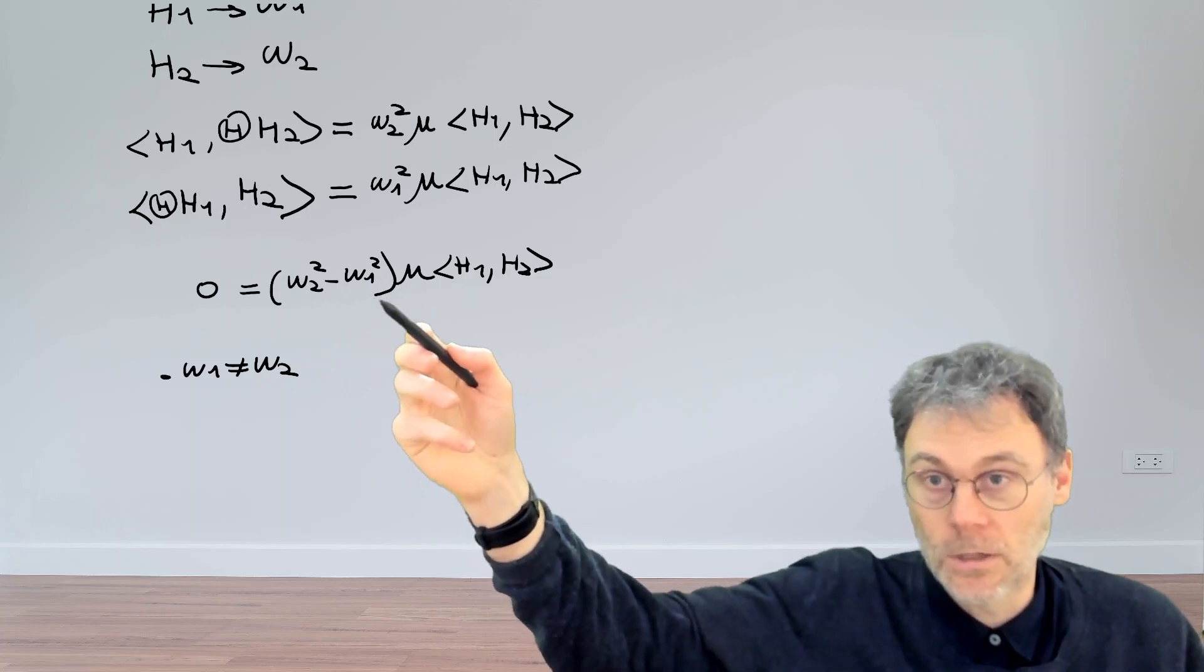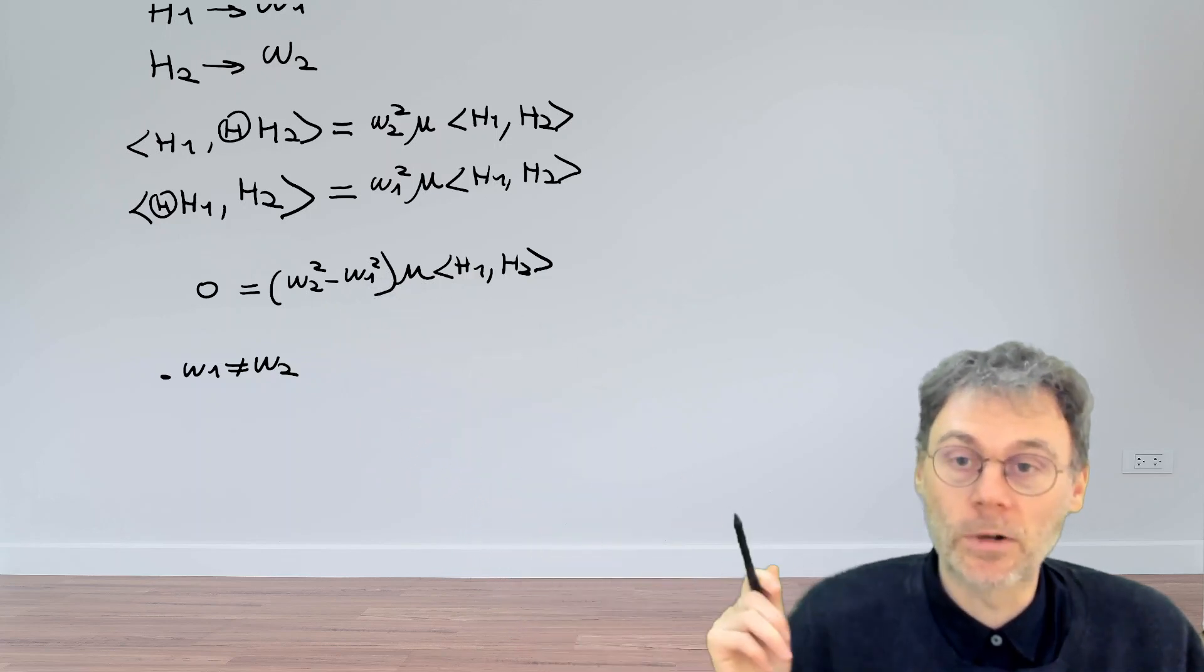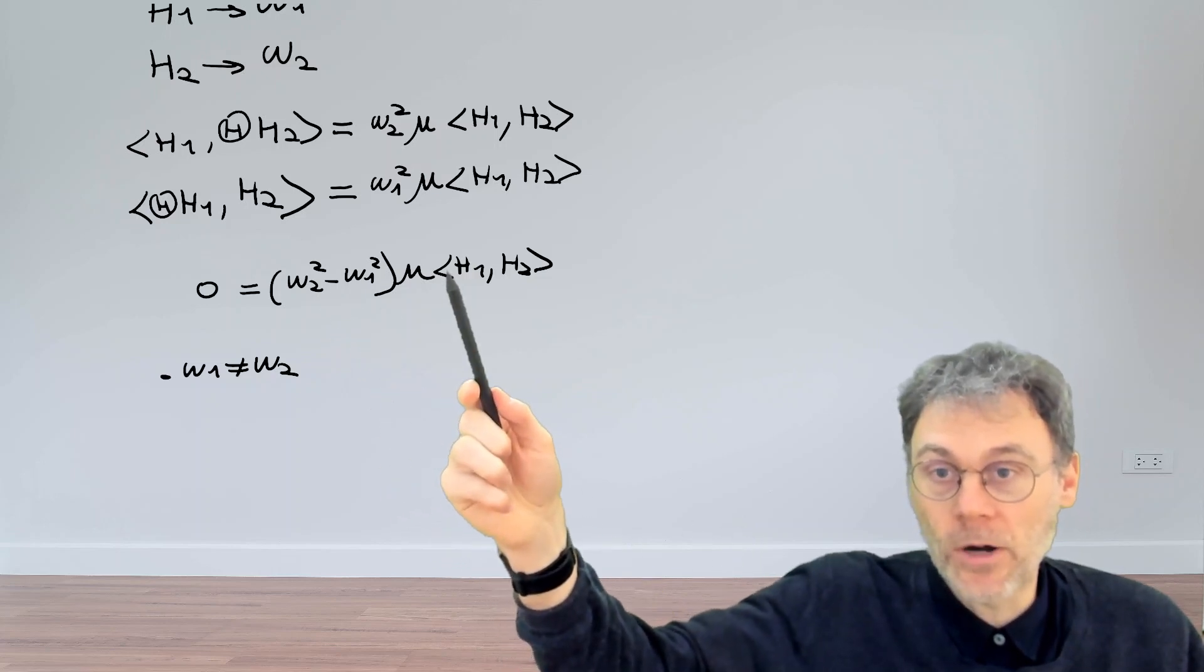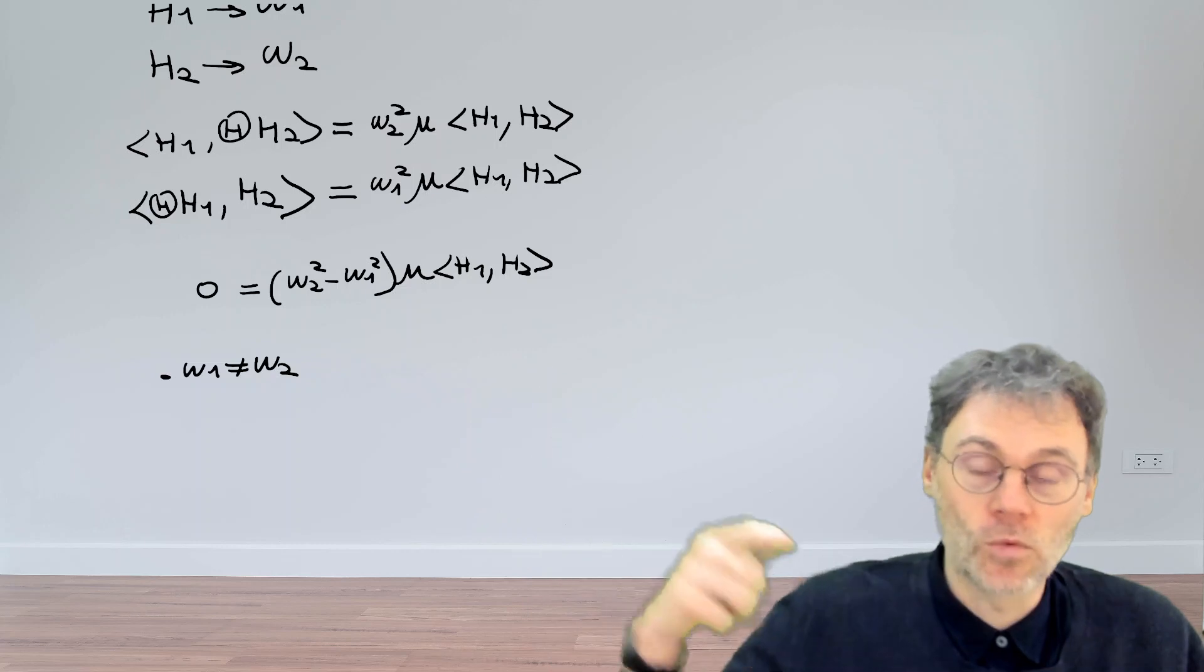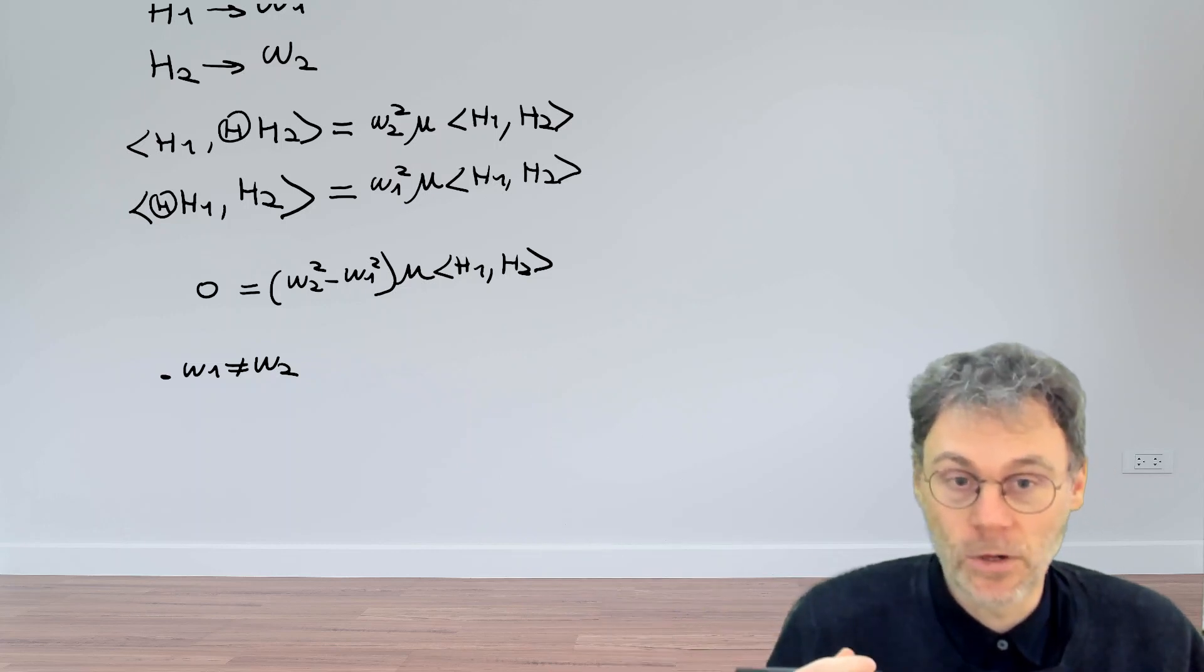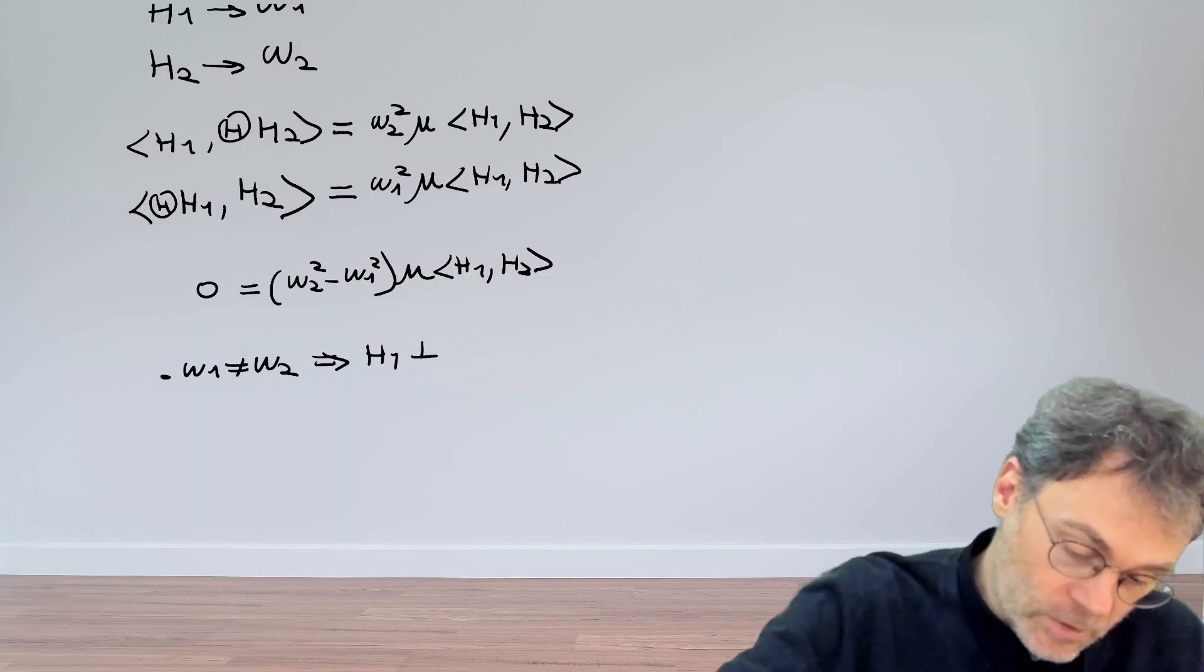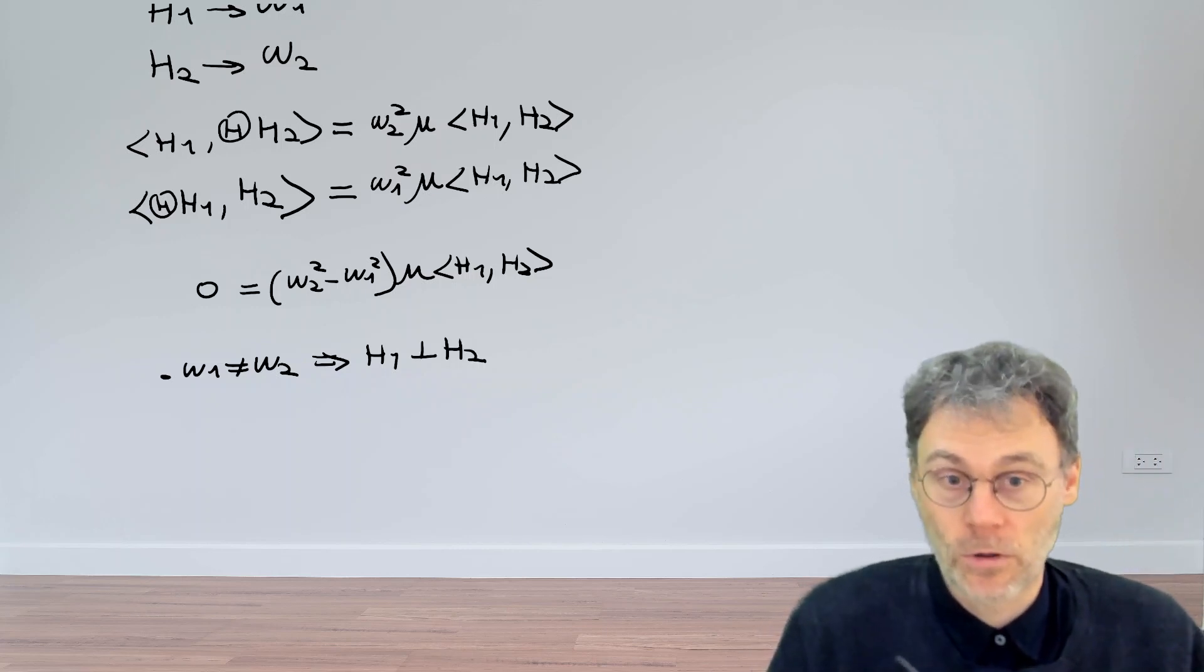Mu, of course, is not zero because we're typically working with non-magnetic media. So the only conclusion is that the scalar product H1 and H2 is zero. This means that under the definition of our scalar product, H1 and H2 are orthogonal.